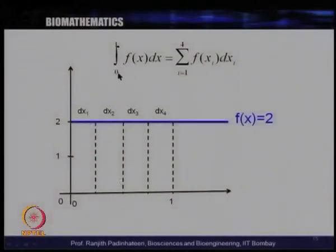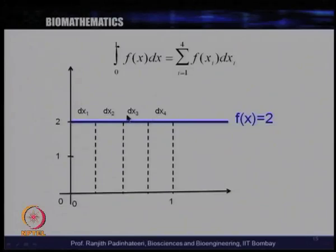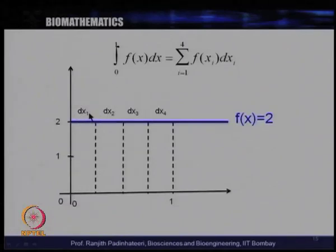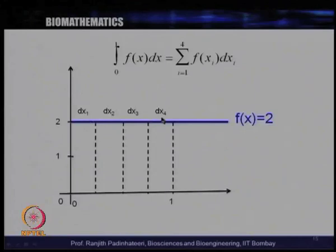For example, the integral from 0 to 1 of f(x) dx can be divided into many parts with widths dx1, dx2, dx3, dx4. The sum of f(xi)·dxi over i gives the area under the curve, because area is width times height. So f(x1)·dx1 + f(x2)·dx2 + f(x3)·dx3 + f(x4)·dx4 gives this area — and this is nothing but the integral.